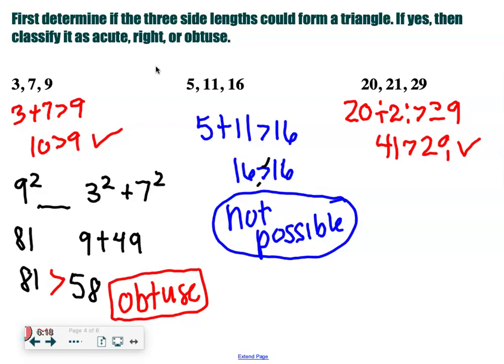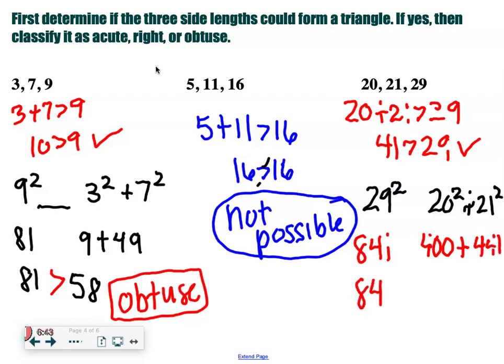Okay, then remember c is always our biggest one. Which one's our biggest? 29. Leave it blank. 20 squared plus 21 squared. Can someone help me? What's 29 squared? 841. Okay, 20 squared is 400. What's 21 squared? 441. So 841 compares to 841 how? So what does that mean? They are a right triangle. Because the Pythagorean theorem equaled out, so it is right.